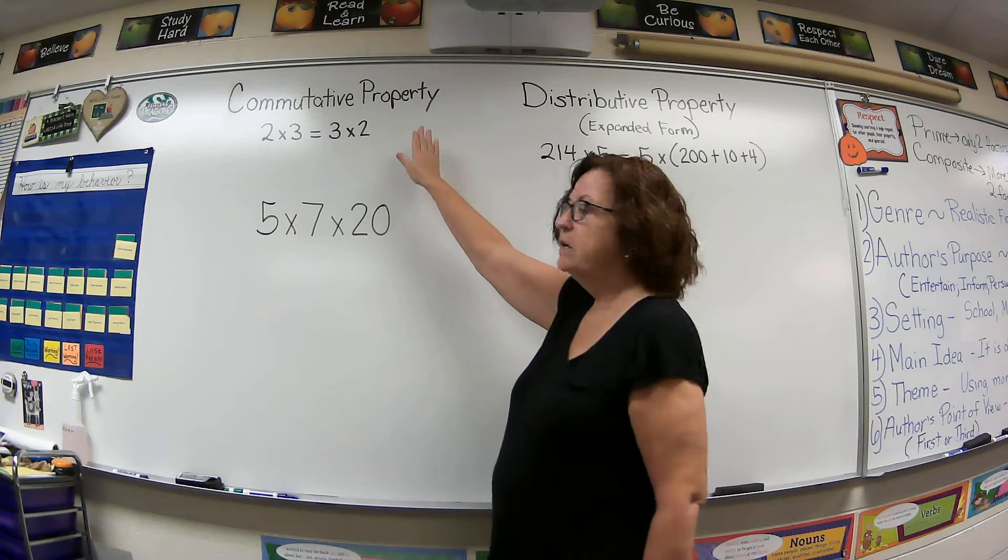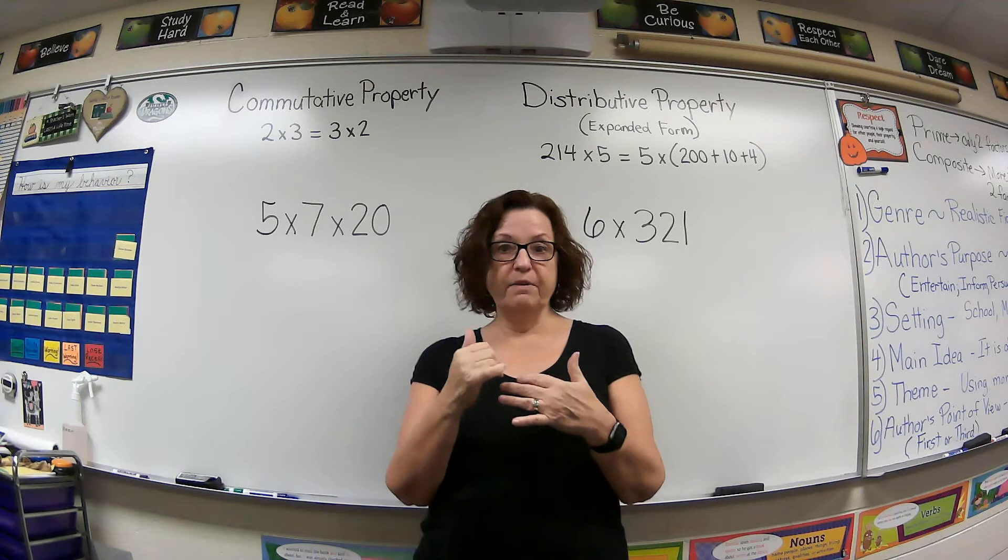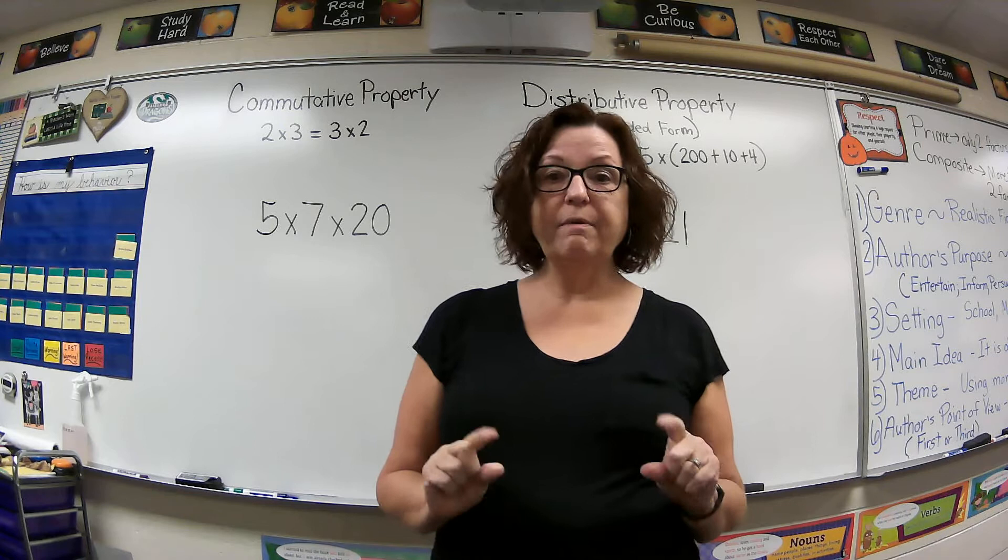The commutative property just states that the numbers can be in any order. They can move around - I like to say they move around the community but they still go to the same school. The numbers can move around but you still get the same answer. So that's the commutative property.